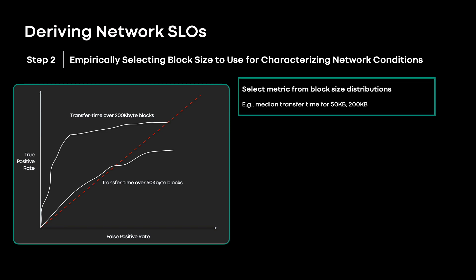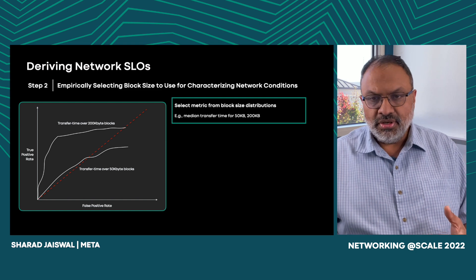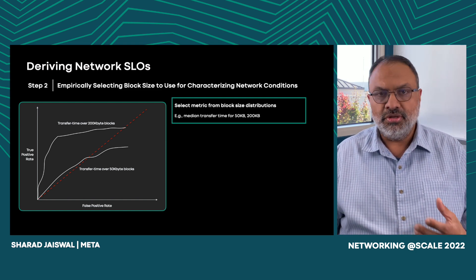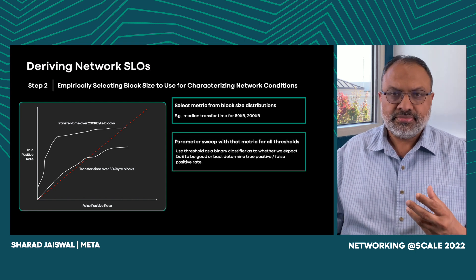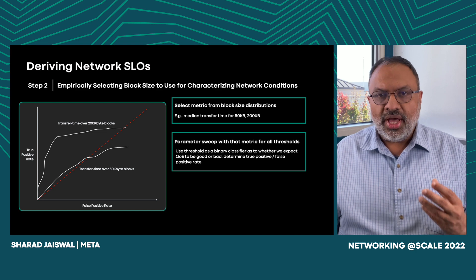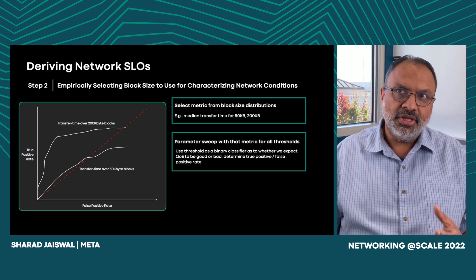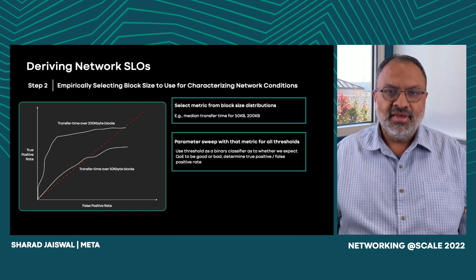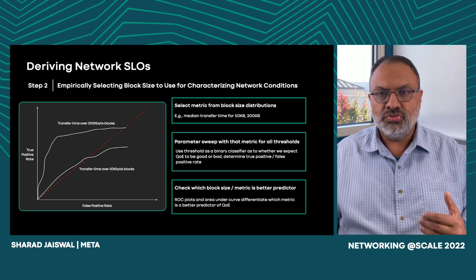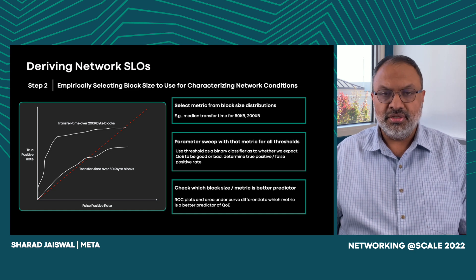While we can associate network QoS samples with the QoE metric, we still have the question: what is the size of synthetic blocks over which we compute transfer time quality of service? This is dependent on the application's sensitivity to the timescale at which network conditions vary. Since we don't know this in advance, we evaluate different versions of metrics — for example, the median transfer time over 50 kilobyte blocks versus 200 kilobyte blocks — and evaluate their efficacy to predict application QoE. We treat a particular value of a metric as a threshold for a binary classifier: if that threshold is exceeded, application QoE is predicted to be bad. We do a parameter sweep over all thresholds for all candidate metrics and evaluate quality by comparing true versus false positive rates. The metric which gives the best area under the curve wins.